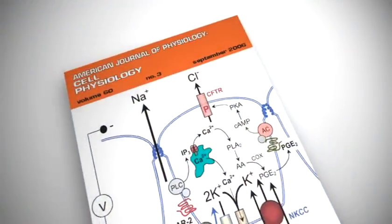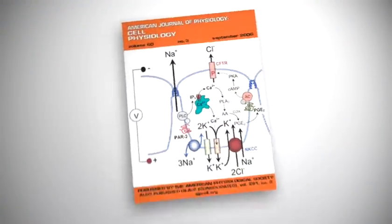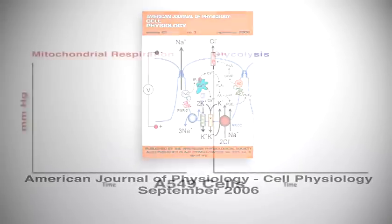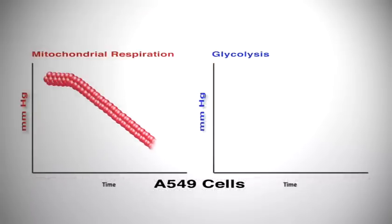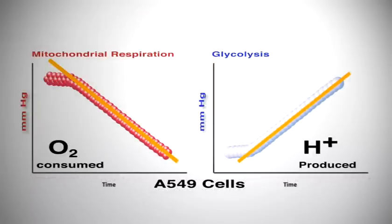We validated OCAR and ECAR as indicators of mitochondrial respiration and glycolysis using A549 cells. We measured the oxygen consumption rate and extracellular acidification rates of A549 cells exposed to three well-defined metabolic modulators.